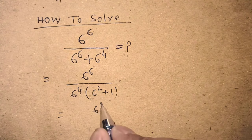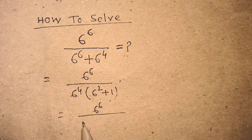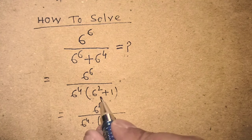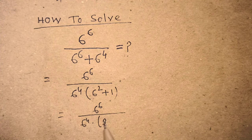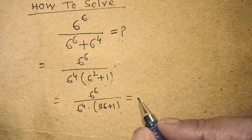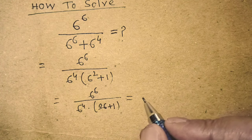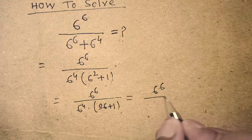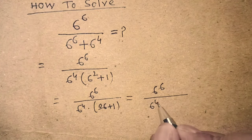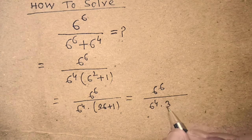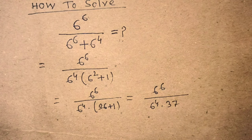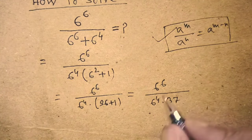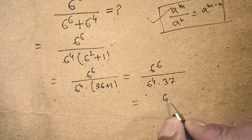So it will be 6 to the power 6 over 6 to the power 4 times 36 plus 1, which gives us 6 to the power 6 over 6 to the power 4 times 37.